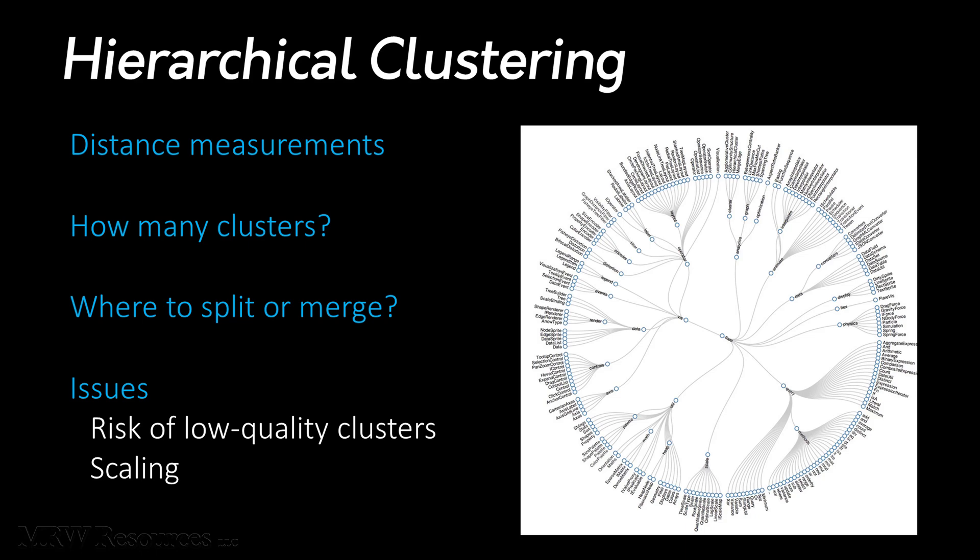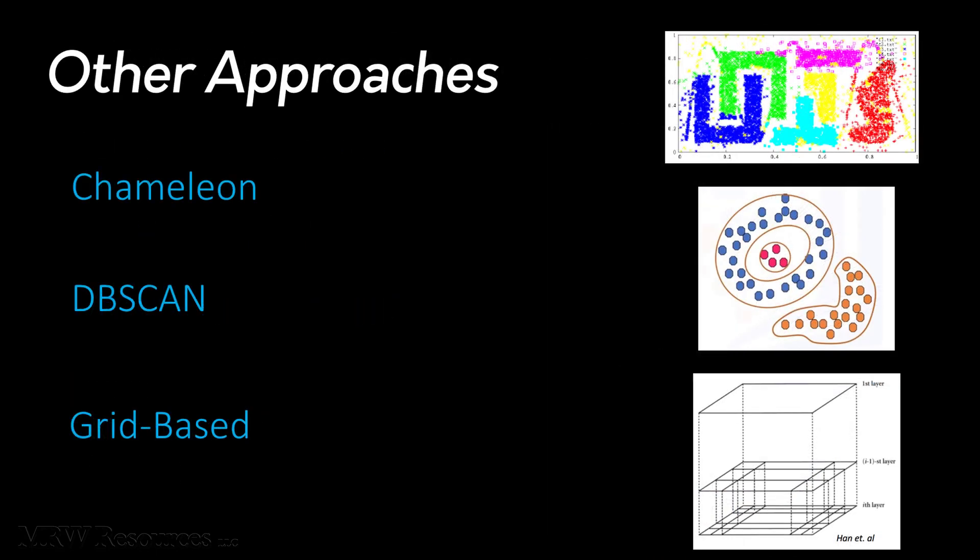That circular dendrogram is one way, and we see that often in taxonomies. Now, there are other approaches to clustering as well.